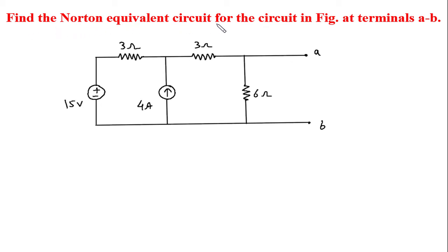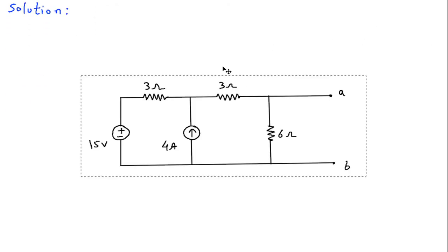Find the Norton equivalent circuit for the circuit in figure at terminals AB. Solution: First of all we will redraw the circuit.